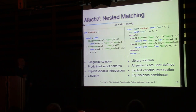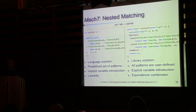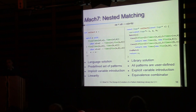Comparing the language solution versus the library solution: the language solution has the set of patterns hard-coded, with implicit variable introduction. In the library solution, all patterns are user-defined — the library doesn't know about any specific pattern. There is explicit variable introduction and we can introduce our own combinators, like the equivalence one. Because the set of patterns and combinators are open, this is the kind of thing we can do.